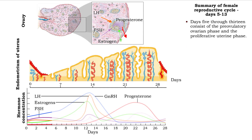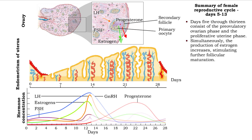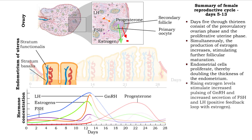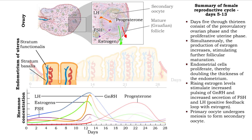Days 5 through 13 of the cycle consist of the preovulatory ovarian and proliferative uterine phases. The presence of follicle-stimulating hormone and luteinizing hormone stimulates the development of ovarian follicles, which then increase their production of estrogen. The increased levels of estrogen stimulate the stratum basalis of the uterine endometrium to proliferate and thicken. As the ovarian follicles mature and make more estrogen, the high levels of estrogen create a positive feedback loop to the hypothalamus and anterior pituitary, stimulating secretion of gonadotropin-releasing hormone, follicle-stimulating hormone and luteinizing hormone, and further maturation of the follicles.